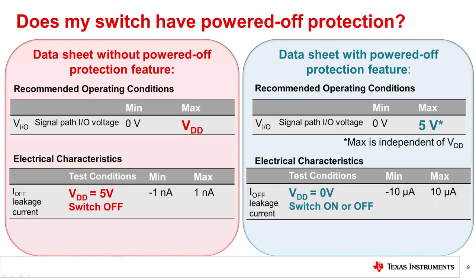Now, how do you know if your switch has powered off protection? In the datasheet of a switch without powered off protection, the recommended operating conditions will reference the signal path IO voltage to the supply voltage VDD, and the electrical characteristics will only provide an off leakage current characteristic while the device is powered on. In the datasheet of a switch with powered off protection, the recommended operating conditions will reference a max voltage independent of VDD, and the electrical characteristics will provide an off leakage current characteristic in the condition that the device is powered off. These figures are just examples — check your device's datasheet for exact specifications.